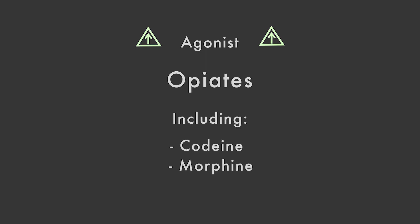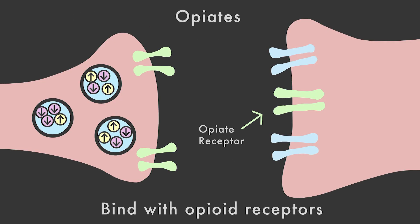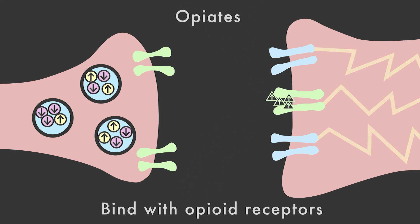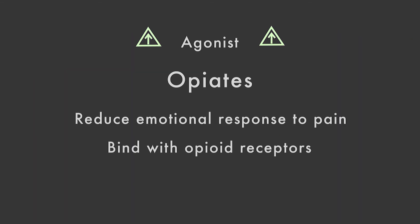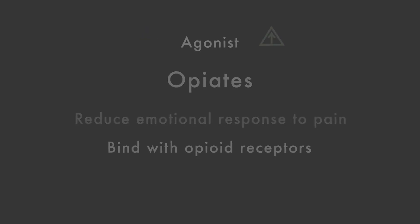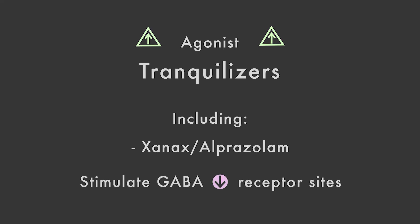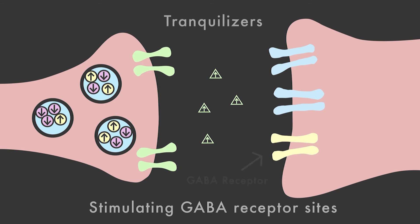Opiates, such as codeine and morphine, also function as agonists, increasing receptor site activity. They reduce our emotional response to painful stimuli by binding with opioid receptors and mimicking endorphins. Tranquilizers, such as Xanax, whose generic name is Alprazolam, diminish anxiety by stimulating GABA receptor sites, thereby driving down neural activity.